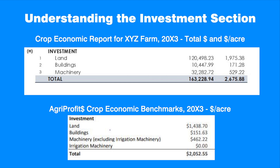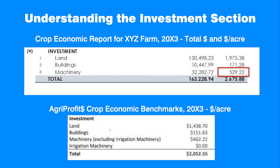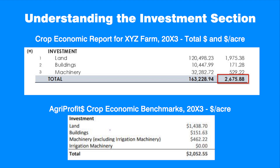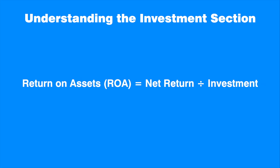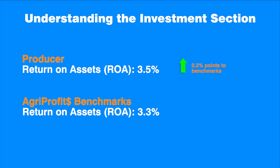Let's compare the producer's investment results with the corresponding AgriProfits crop benchmarks. In our example, the producer's buildings investment of $171.28 per acre is about 32% higher than the benchmarks. The producer's machinery investment is $529.22 per acre and is also higher than the benchmarks by about 15%. This tells us that canola production in our example is more intensive in terms of land, building, and machinery than the average conditions represented by the AgriProfits benchmarks. To determine if those investments are justified, we examine return on assets — in our example, it is 3.5%, which is 0.2 percentage points higher than the AgriProfits benchmarks.